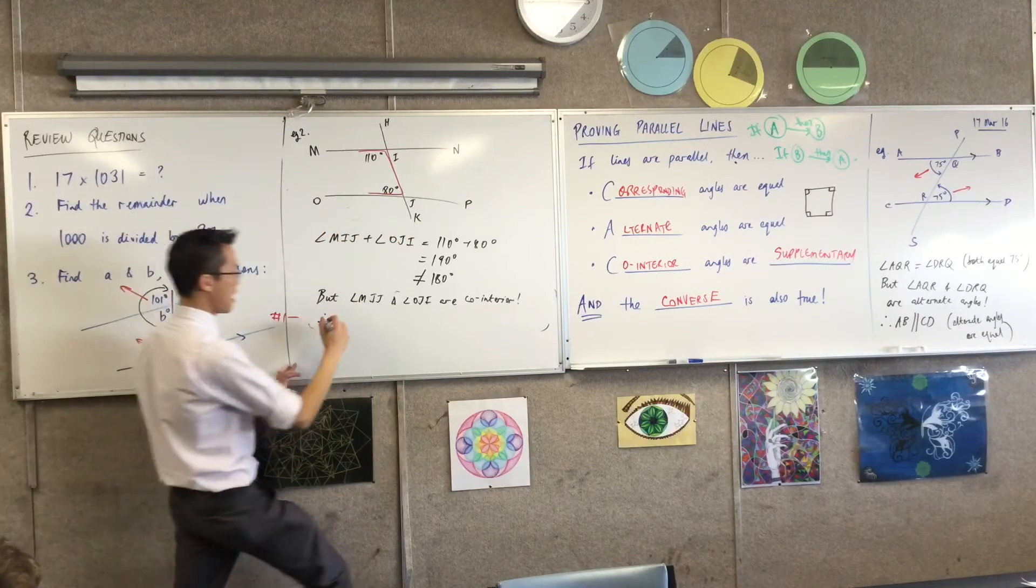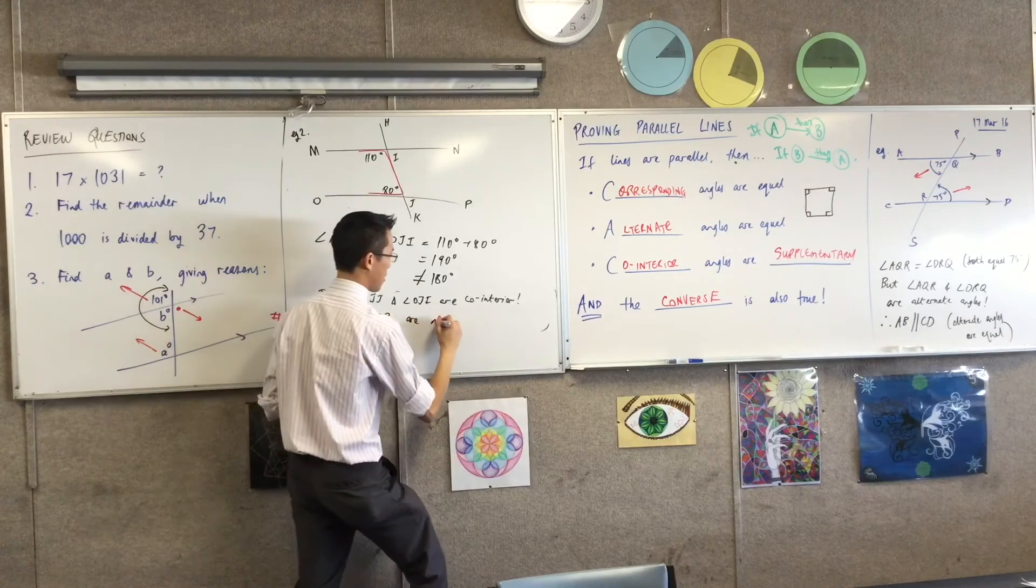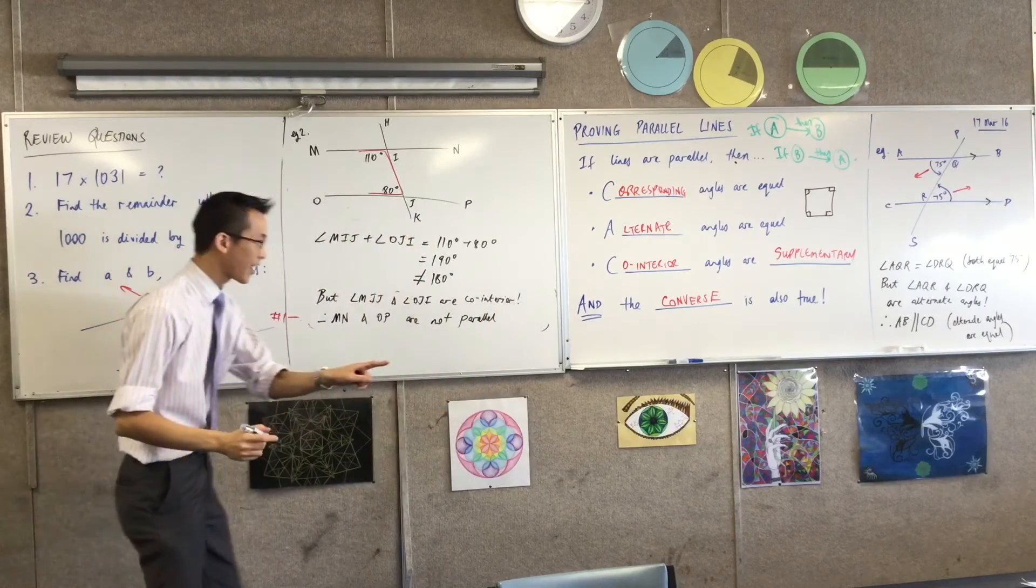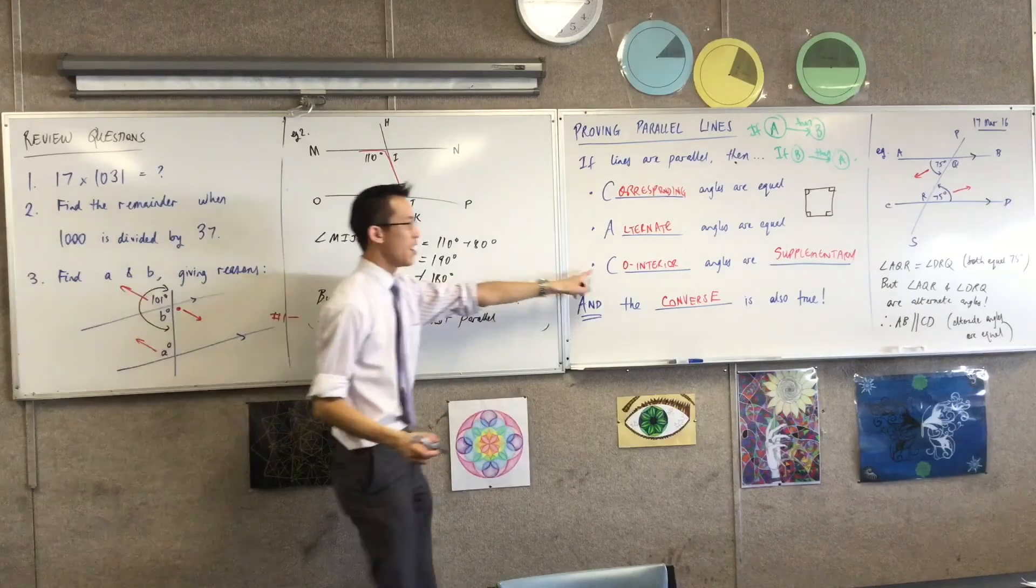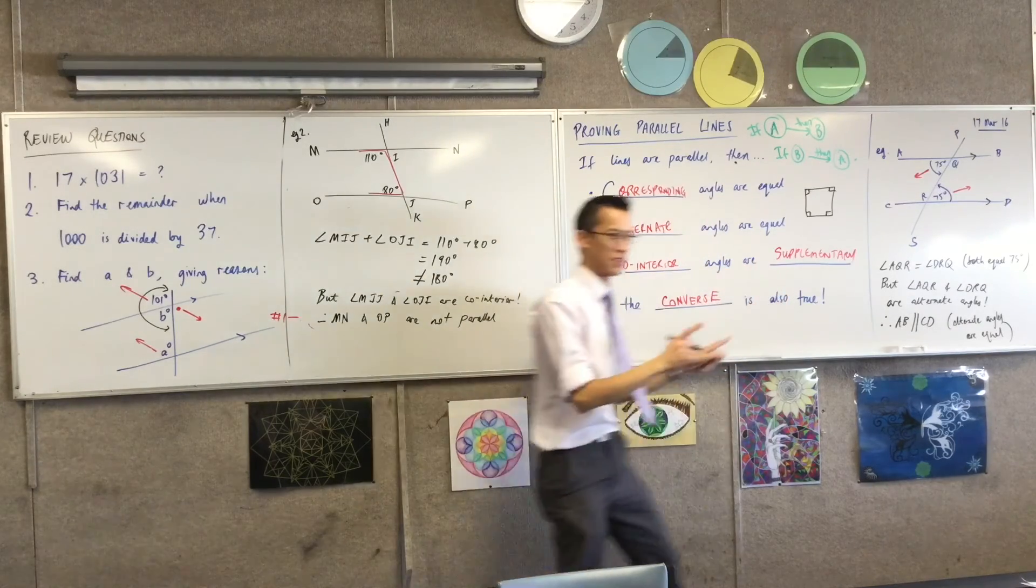So, I'm going to conclude that. Therefore, what are they called? MM and OP are not parallel. And the reason, again, has to do with this. The co-interior angles are not supplementary. They're not supplementary. So, it's the reverse.